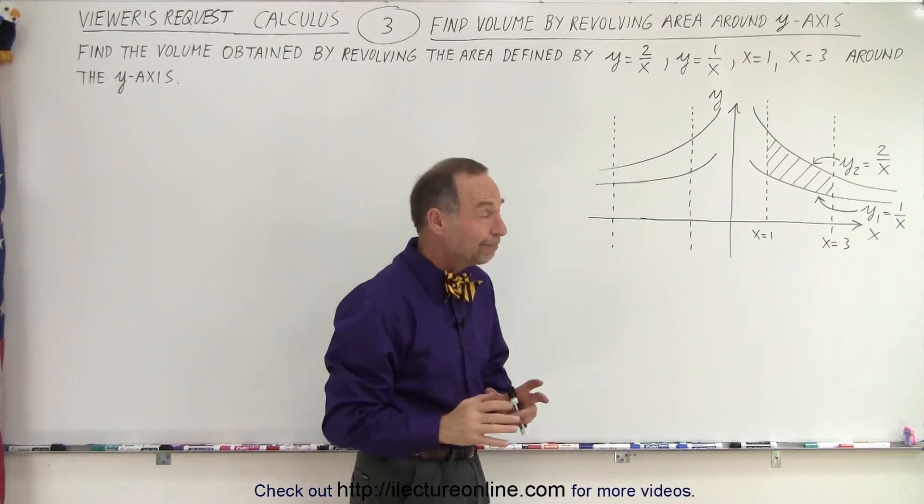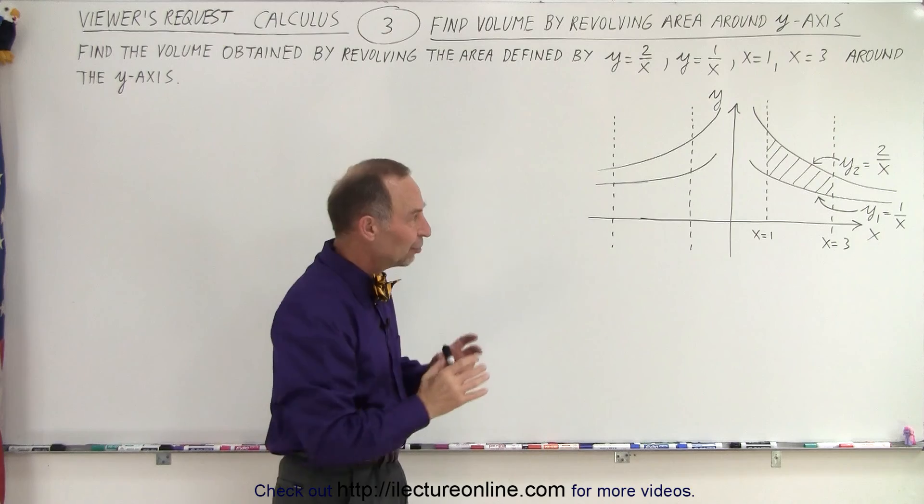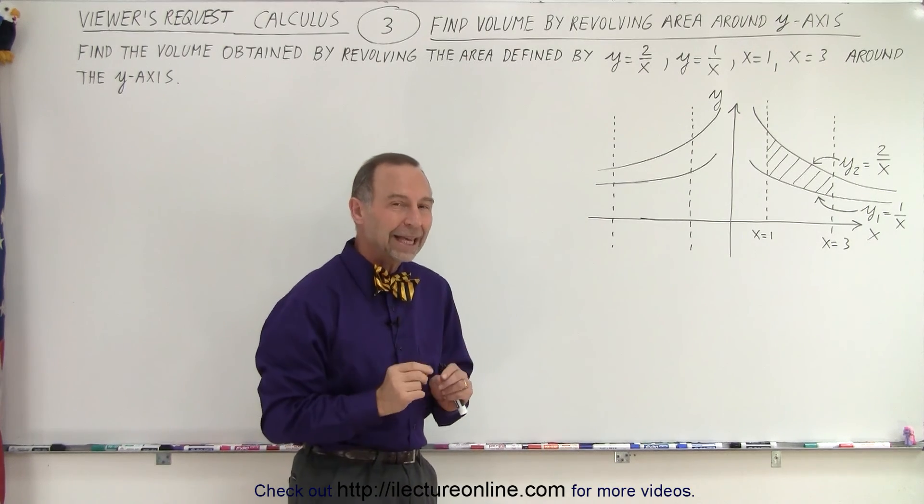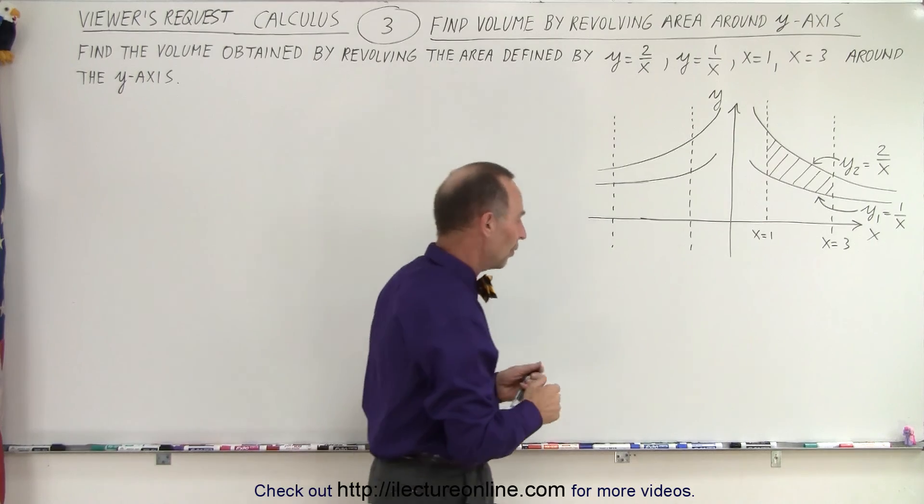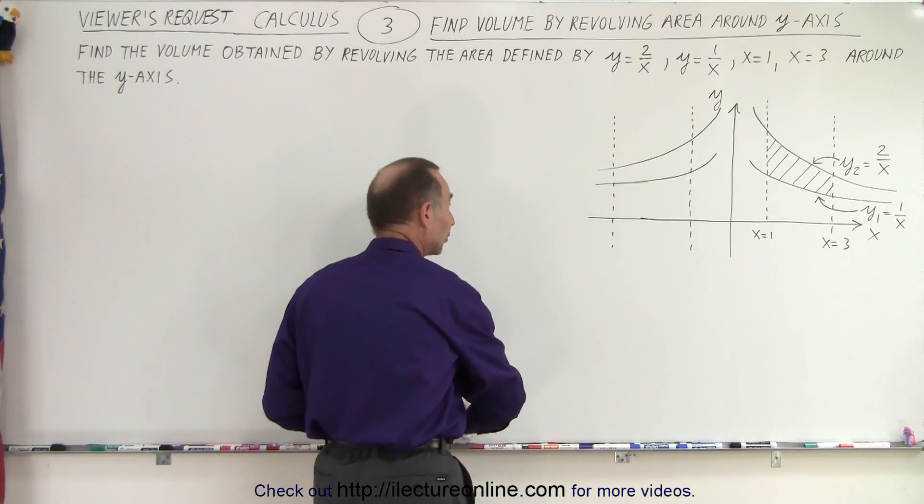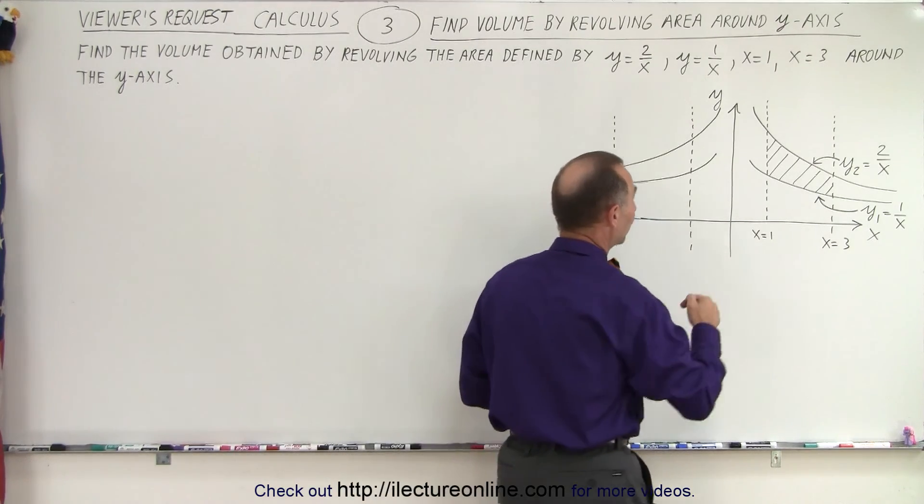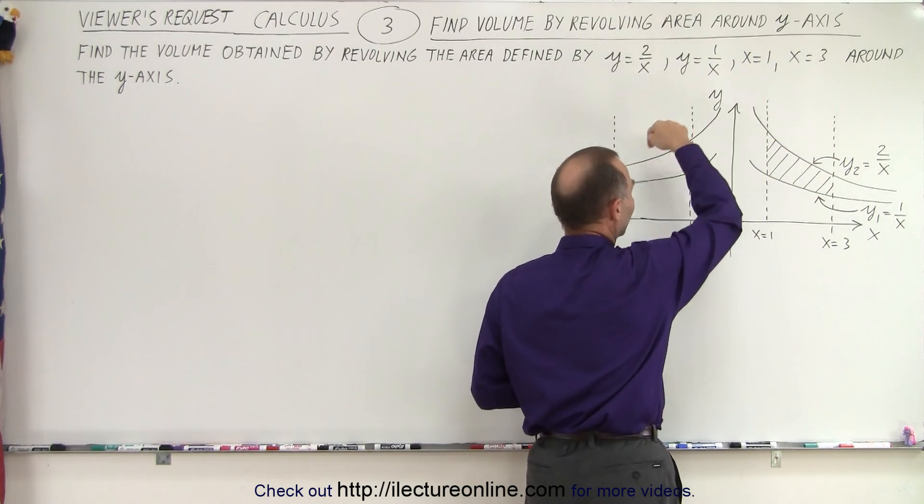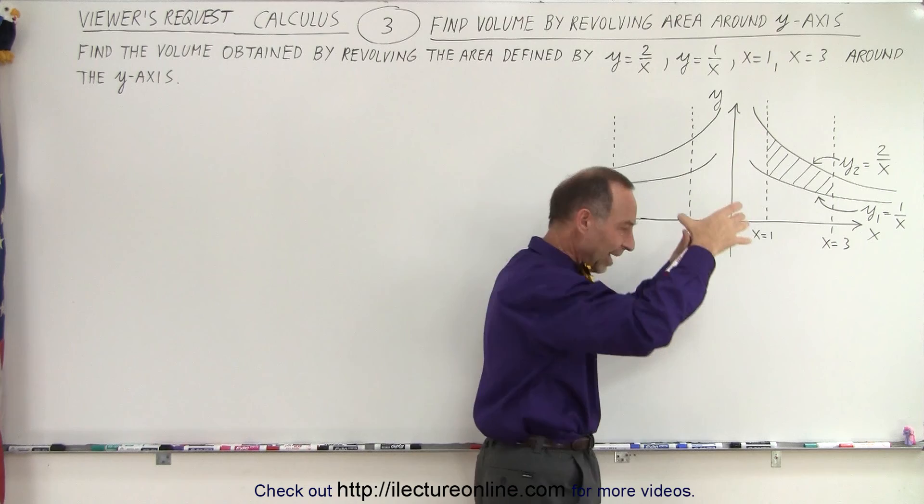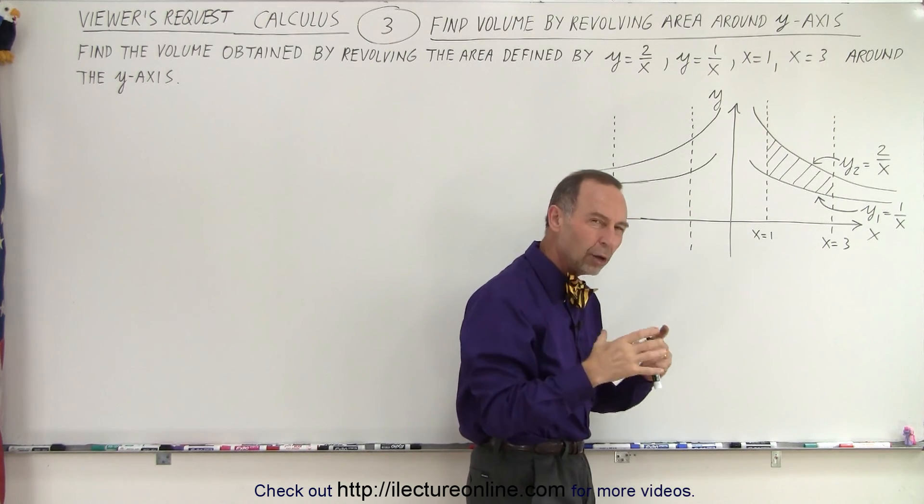So how do we solve that? It's a little bit different. The small volume element that we get has a different shape, and we have to be able to define it. Imagine what would happen if we were to slice it. In this case, we're going to slice it in such a way that the slice goes all the way around. We're going to slice out a small little hollow cylinder.